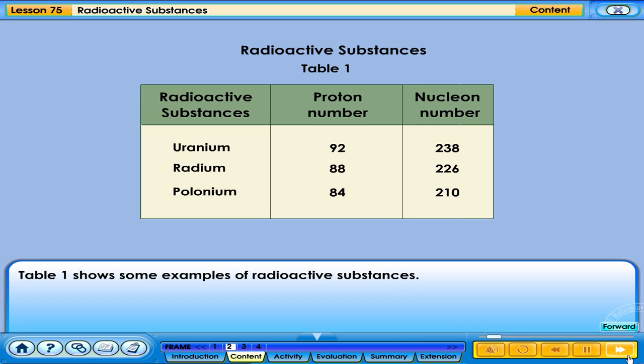Table 1 shows some examples of radioactive substances. Observe the proton number and the nucleon number of the substances. Click the respective substance to know more about it.